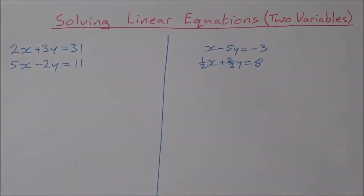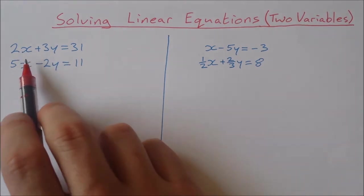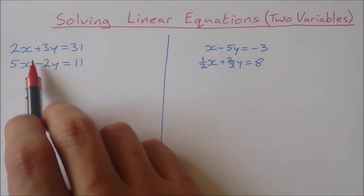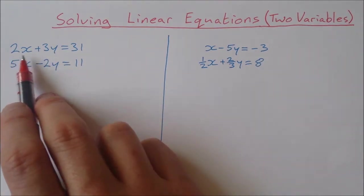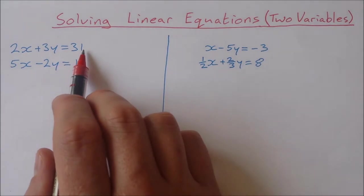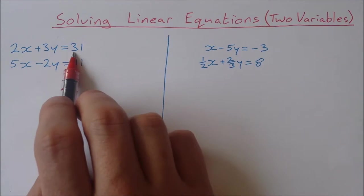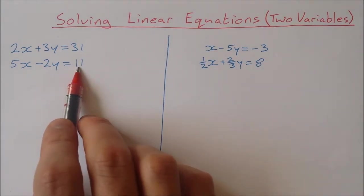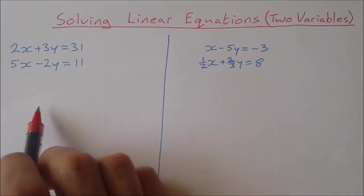In this video we're going to take a look at solving linear equations with two variables. We have two equations and two unknowns in each equation, and we have to find a value for x and a value for y that fits and solves both. For example, 2x plus 3y equals 31 has an infinite amount of solutions, and so does the other equation, but there's only one set of values that will solve both.